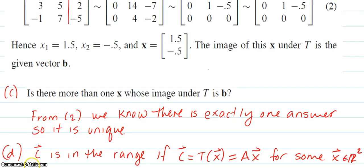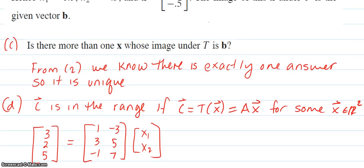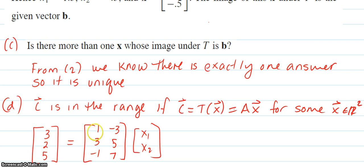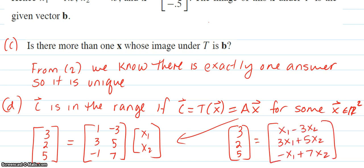What are we asking for? We're asking if c is in the range. And it is in the range if c equals T(x). And what is T(x) again? It's Ax for some x in R2. I just want to know if, in terms of what c was—there's where A is—it's in this equation, and that's x. And again, if I multiply that out, that's 3, 2, 5, better equal—the same matrix we got for part b.